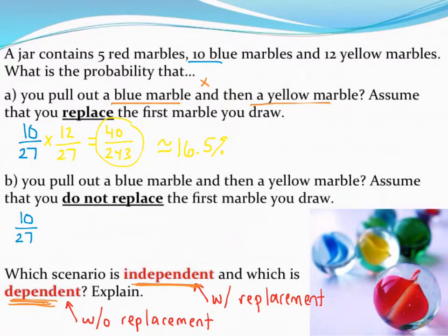However, instead of putting that blue marble back in, I take it and throw it away. So it's no longer in the jar. That means there's still 12 yellow marbles. However, I'm only pulling those 12 yellow marbles out of a total of 26 because I've thrown that blue marble away. So my probability is going to be a little bit different.